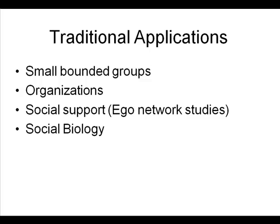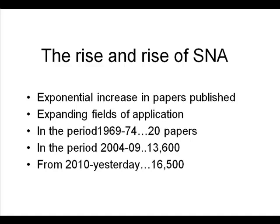What do we do with this? Traditional applications looked at fairly small bounded groups — anthropological studies in villages, classrooms of children, or relatively small sets of organisations like the Fortune 500 or top 100 FTSE companies. Another area is ego networks focused on social support — for example, people recovering from severe mental illness: where do they get their support from? And the area of social biology — animals hitting, pecking, and those kinds of things.